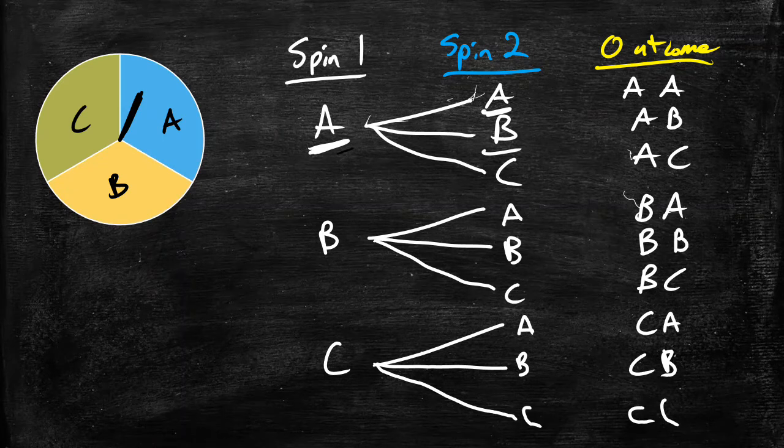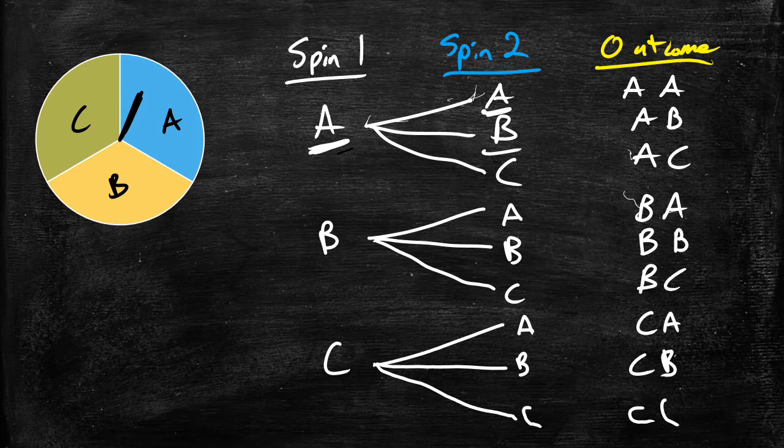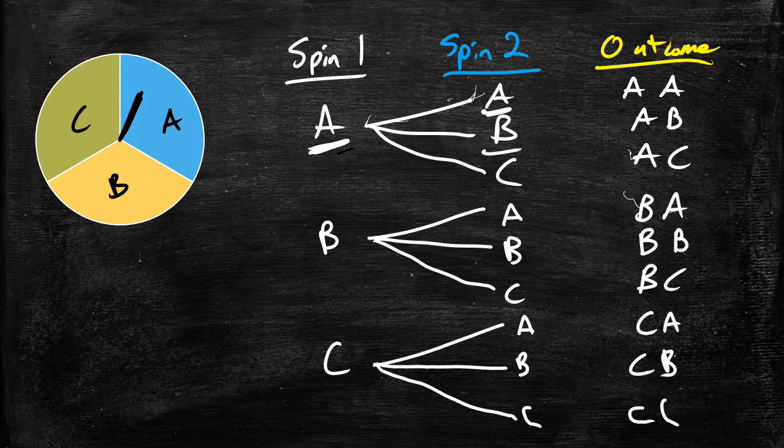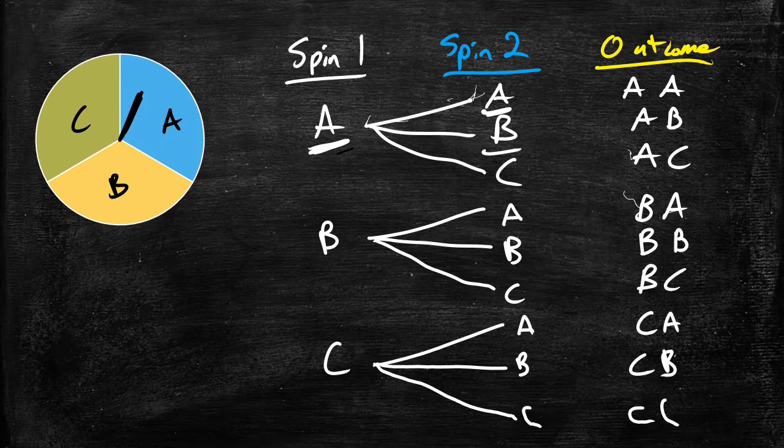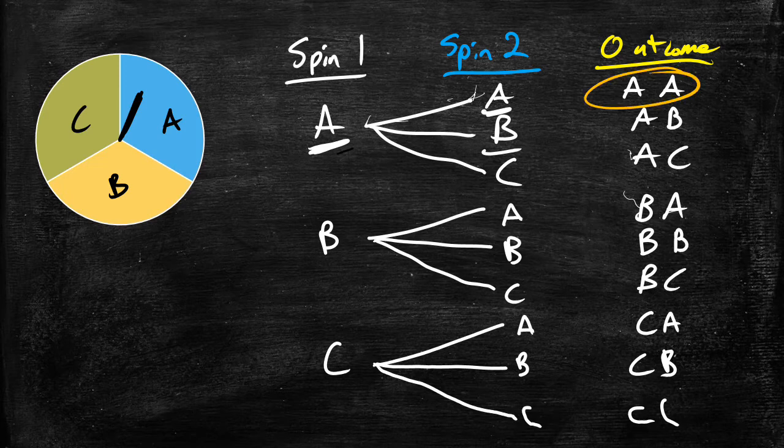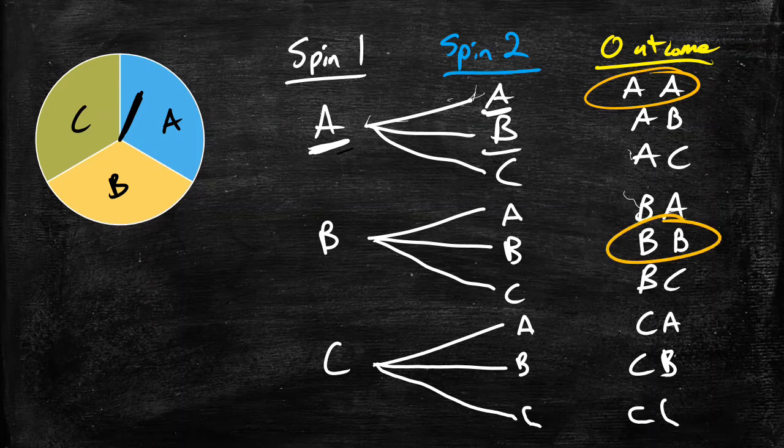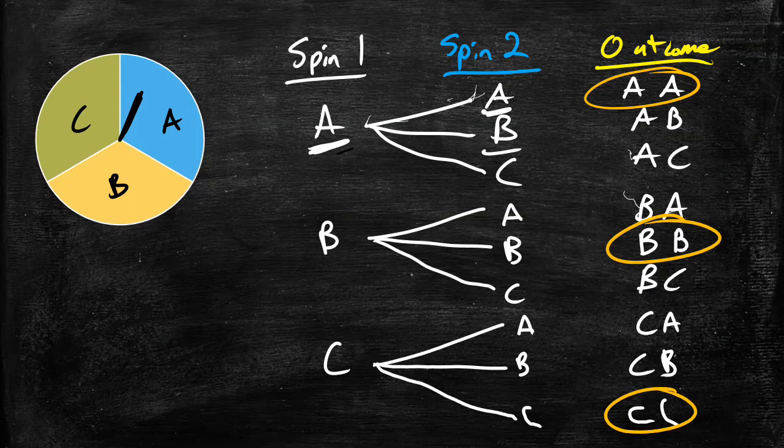What I really want to know here, what my question might be if I get a spinner question like this is, what is the probability of getting the same letter twice in a row? And if that's the question that we get, we can take a look at how we would get that. You could get an A, A. You could get a B, B, or you could get a C, C.